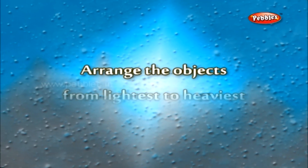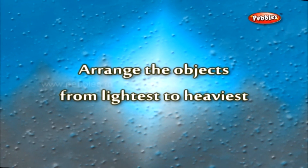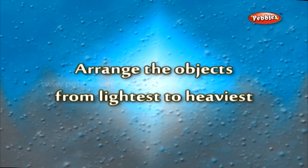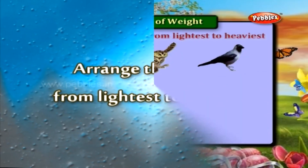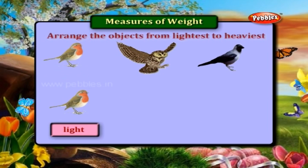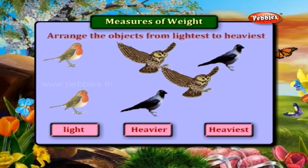Arrange the objects from lightest to heaviest. The sparrow is light. The crow is heavier. The eagle is the heaviest.